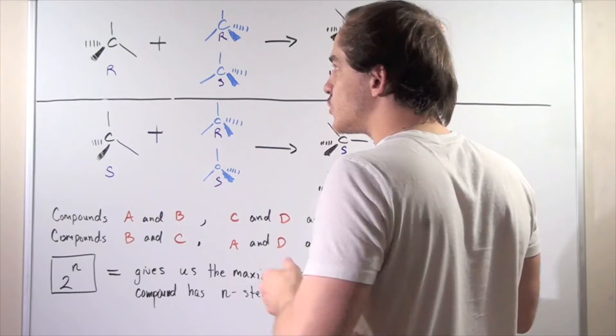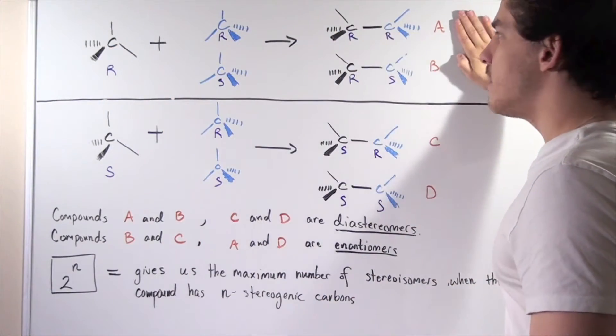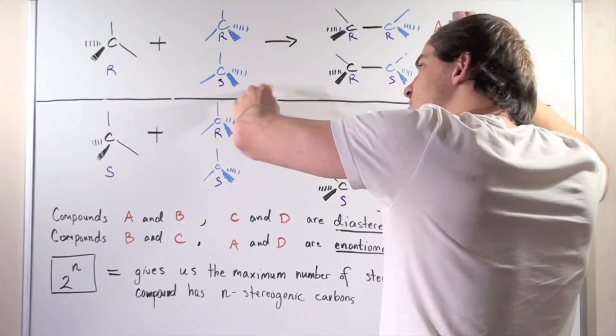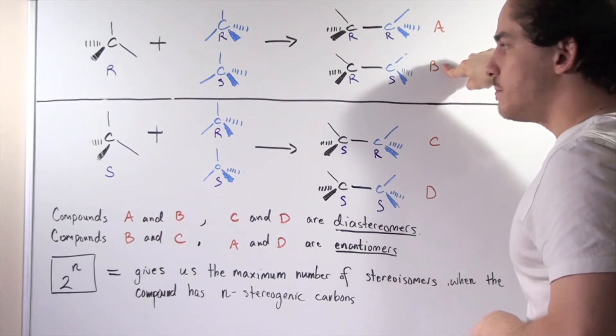So in our first reaction, a bond is formed and we produce the R-R compound. Let's call it compound A. And this R enantiomer then reacts with this S enantiomer to produce the R-S compound known as compound B.